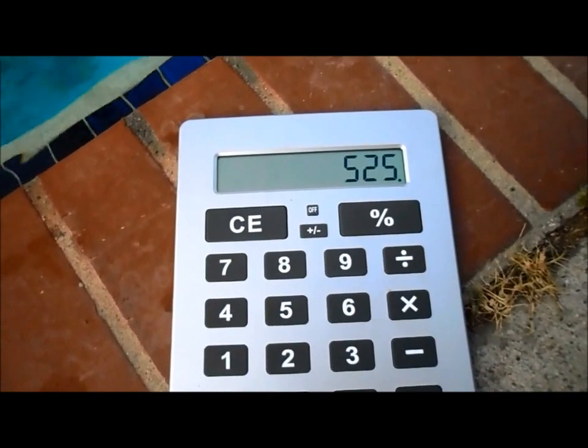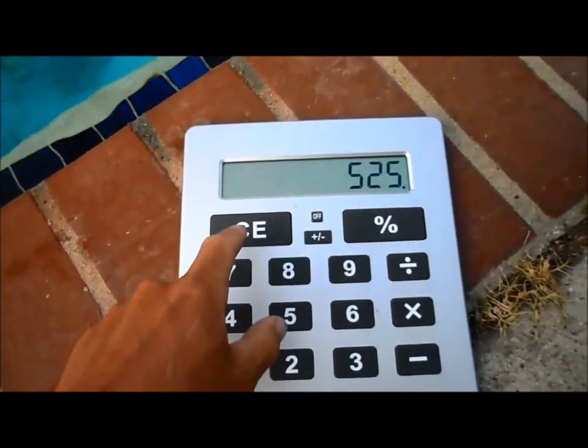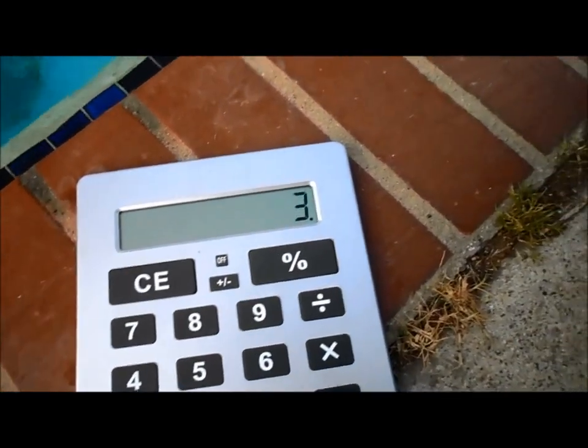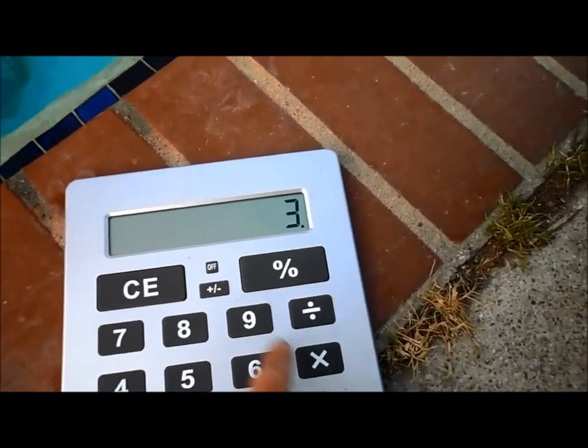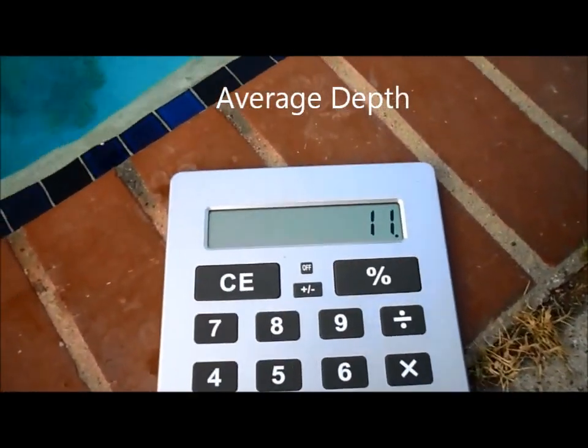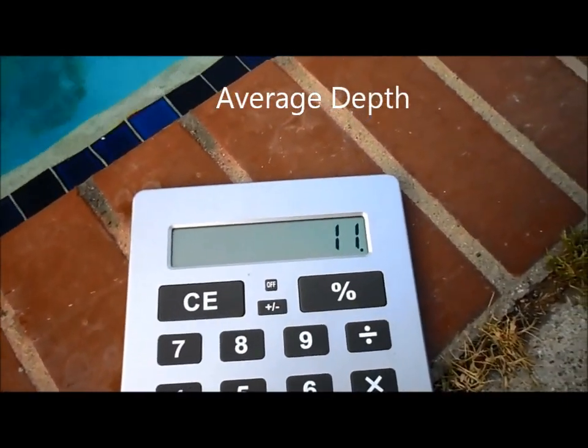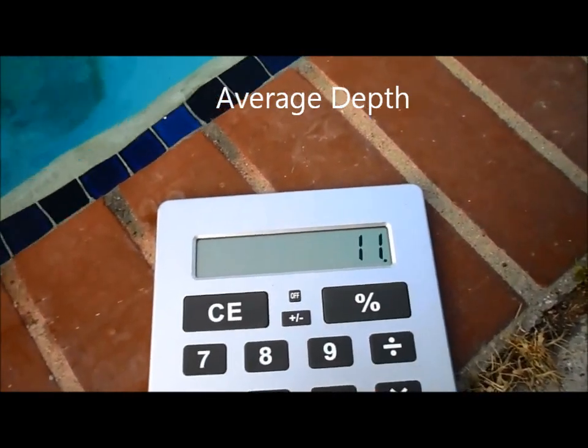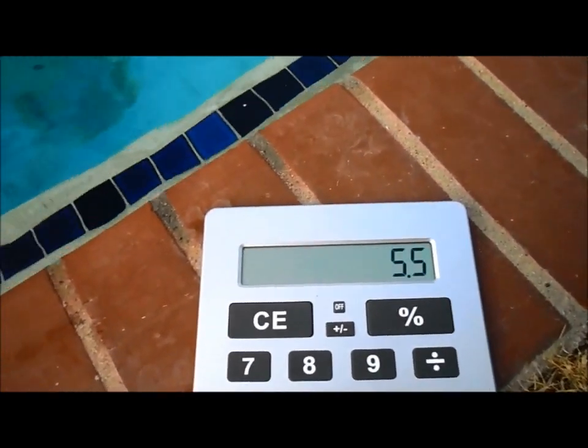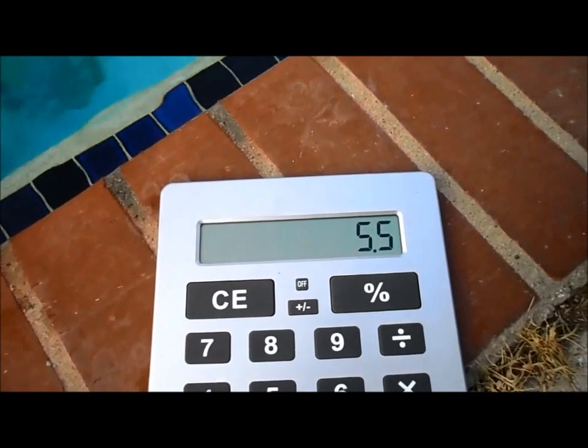We get 525 square feet of pool. Take the depth, 3 feet to 8 feet, so that's 11 feet, and we're going to divide that and get the average, divide it by 2. So the average depth of this pool is 5.5 feet.